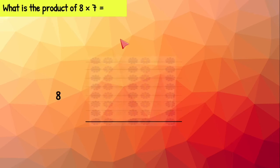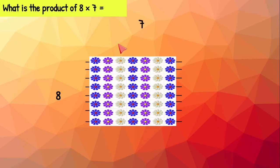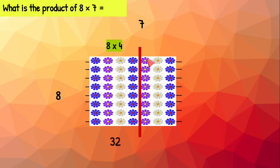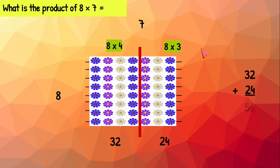Eight times seven means eight rows with seven flowers on each row. Let's go ahead and cut this array. Now we have two arrays. Our first array shows eight rows of four, which is 32. This array shows eight rows of three, which we know is 24. Let's put those together and we get 56. Eight times seven equals 56.